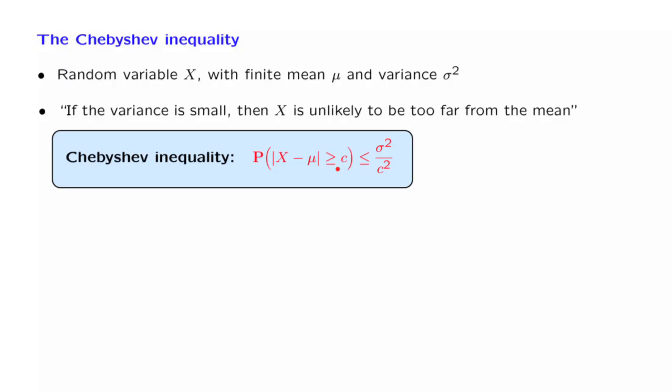And if the number C is large, so that we're talking about a large distance from the mean, then the probability of this event happening falls off at a rate at least 1 over C squared.